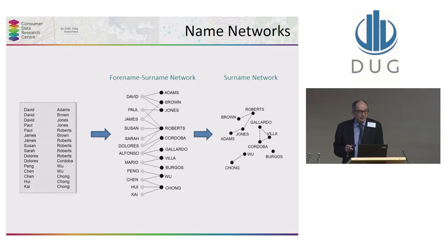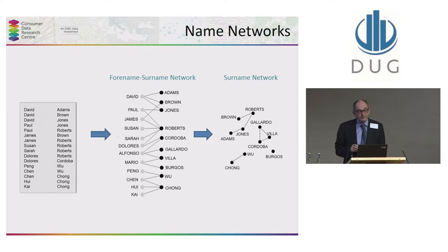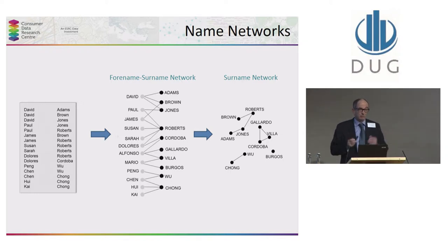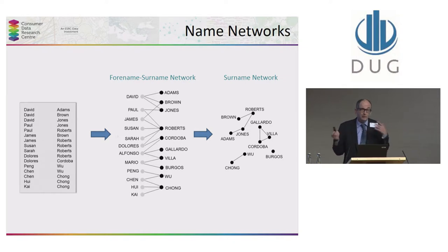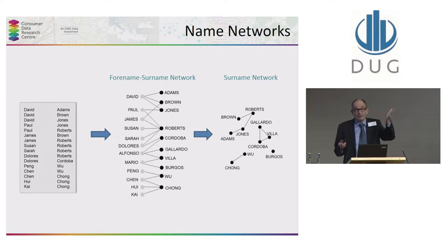Given names paired with surnames can also be used to yield further insights into human identity. This slide summarises work that we've done over the years at CDRC and at UCL. The basic argument goes back ten years when this work started. I worked with a graduate student called Pablo Mateos. I knew that he was Spanish. If you see the name Pablo and look for other surnames of people with the given name Pablo, there's a high likelihood that they may be Spanish as well — you might get Pablo Rodriguez, for example.